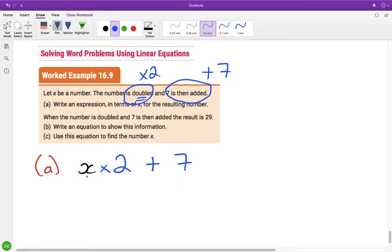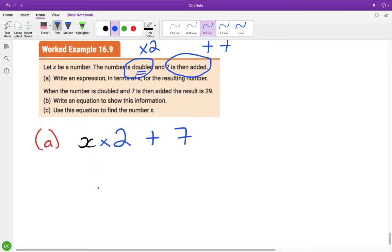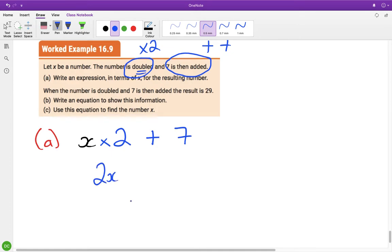Now we tend not to write, when you multiply x by two, this is not how we write it. When you multiply x by two, we write it like this. That's how we've written it all the time. Like, if you want to multiply x by three, you don't write x multiplied by three. You just write three x, remembering that the relationship here between the two and the x is a multiplication. So it's fine to write it like that as you're translating, but then fix it. So x multiplied by two is written as two x plus seven. So for part a, we were asked to write an expression in terms of x for the resulting number. There's my expression.